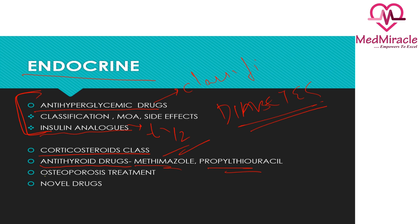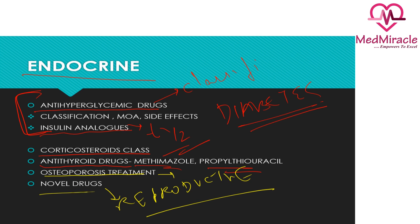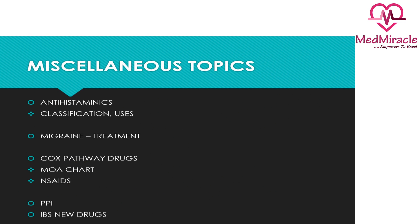For antithyroid drugs, just read about methimazole and propylthiouracil — that's it, it's not a hot topic. For osteoporosis treatment, just read about it superficially. In the reproductive section, there are a lot of novel drugs that are frequently asked by name, so be thorough with the new drugs in this section.